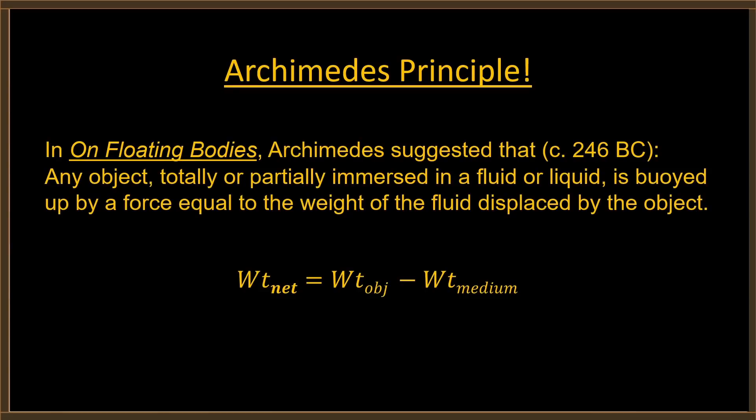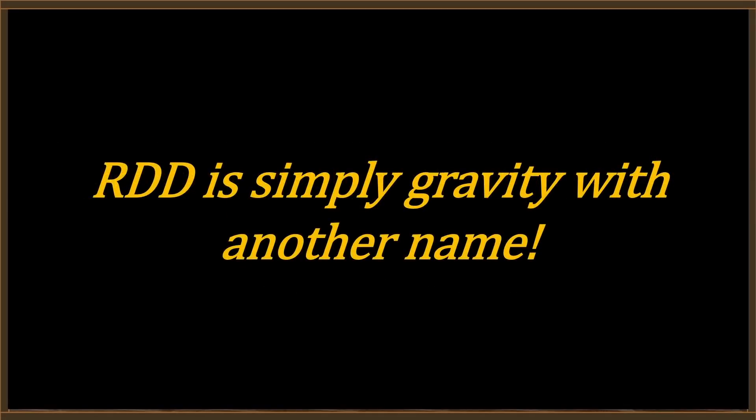If the net weight is positive, then the object sinks. If the net weight is negative, the object floats. If the net weight is zero, the object is neutrally buoyant. In other words, it doesn't do either. Relative density disequilibrium is simply gravity with another name.